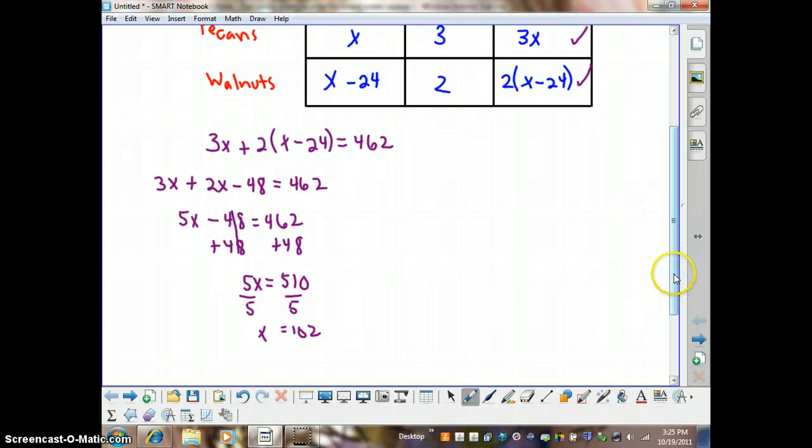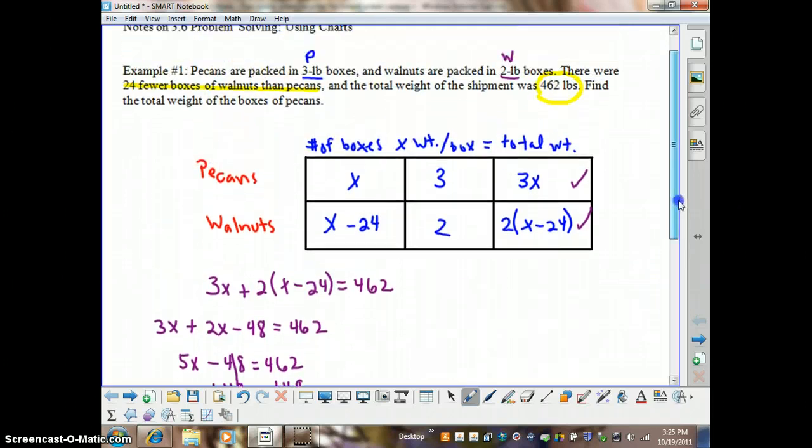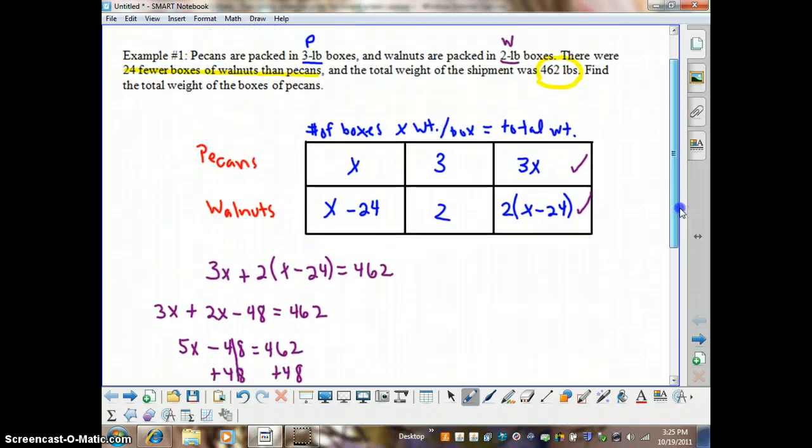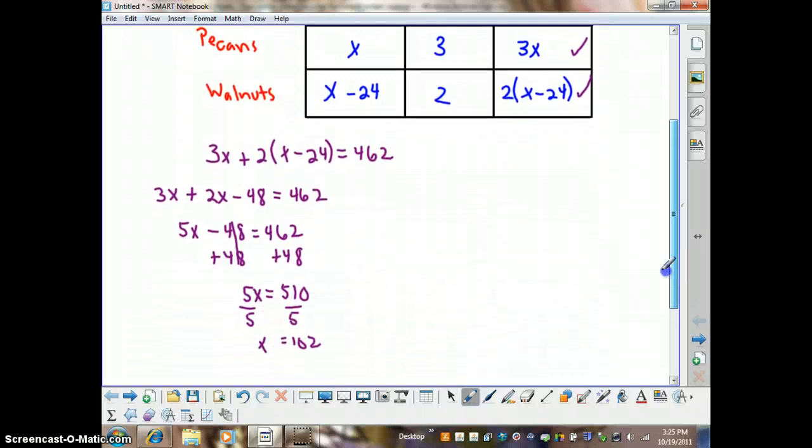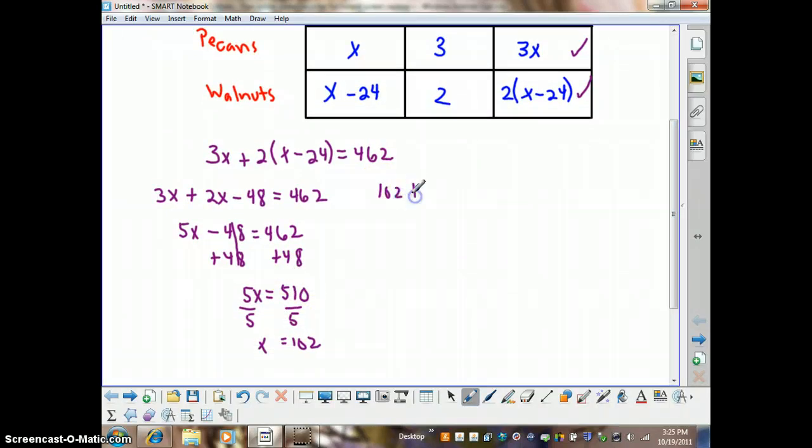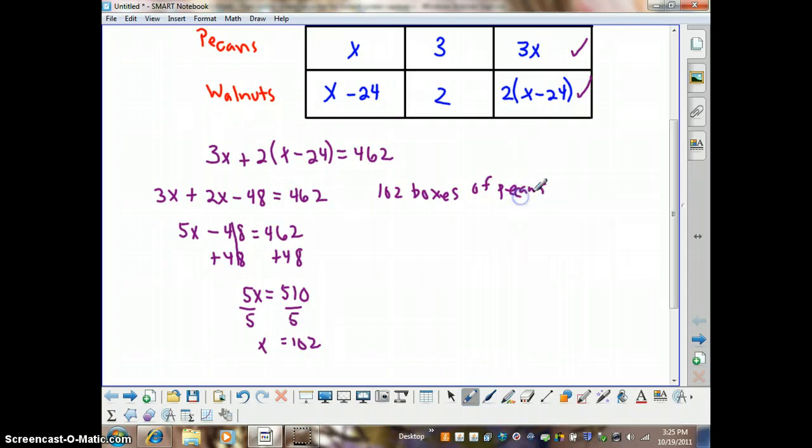Now let's go back and make sure we've answered the question. The question is find the total weight of the box of pecans. Well, this is the number of boxes. There are 102 boxes of pecans. But that's not the weight of those boxes. They weigh 3 pounds each. So we need to multiply the 102 times 3 to get the total weight, which would be 306 pounds.